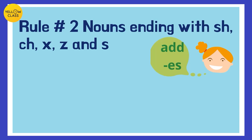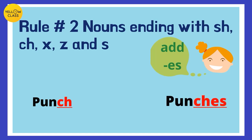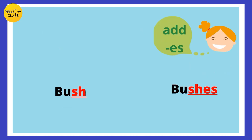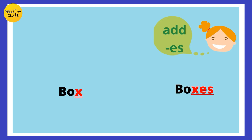Any words ending with certain sounds become plural by adding 'es' at the end. For example, punch — with 'ch' at the end — becomes punches: one punch, many punches. Bush — with the 'sh' sound at the end — becomes bushes. Quiz — with consonant 'z' at the end — becomes quizzes. Box — with consonant 'x' at the end — becomes boxes, with 'es' added at the end.